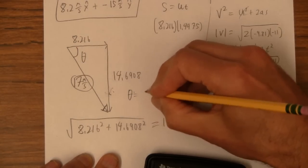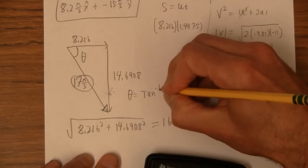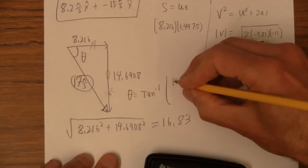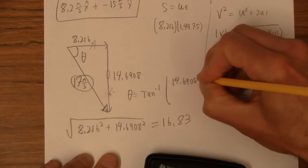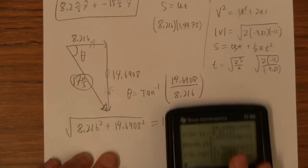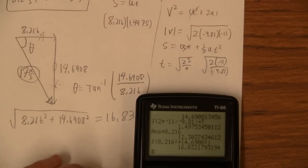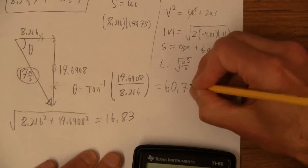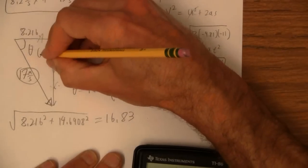That angle is tan minus 1 of the opposite side over the adjacent side. Here's opposite adjacent. 14.6908 divided by 8.216. Take the inverse tan of that. And I get 60.78 degrees. So we'd have to say 61 degrees.